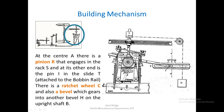This particular rack is attached to the bobbin rail. As the bobbin rail moves up and down, this side of the rack will move up and down, and we shall see how it helps in triggering the building mechanism. The connection is that behind the ratchet shown here is pinion R, which engages with rack S attached to the bobbin rail.